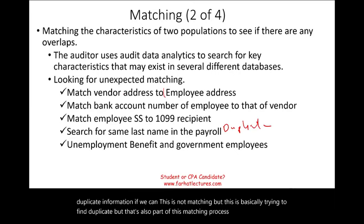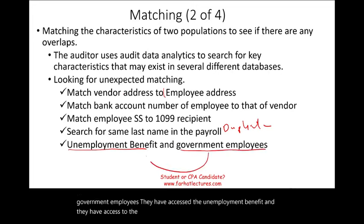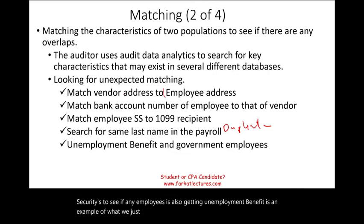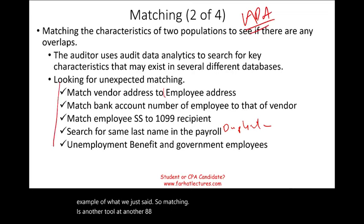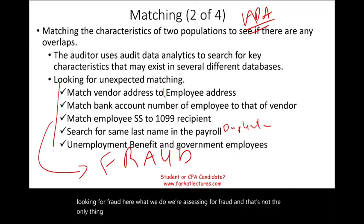For example, government employees have access to unemployment benefits and the government can match social security numbers to see if any employee is also receiving unemployment benefits — just an example. So matching is another ADA tool to assess risk, and matching is mostly looking for fraud, though it can be used for many different techniques.